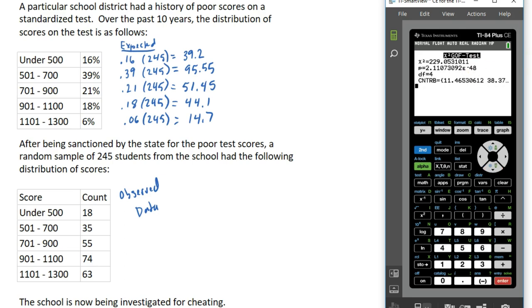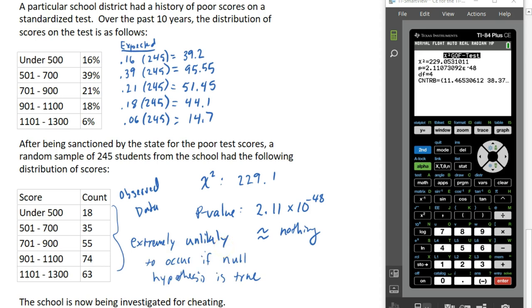That gives us a chi-square statistic of 229.1 and a p-value of 2.11 times 10 to the negative 48 power, which is approximately nothing. So the p-value here is extremely small. What that means is these counts are extremely unlikely to occur if the null hypothesis is true.